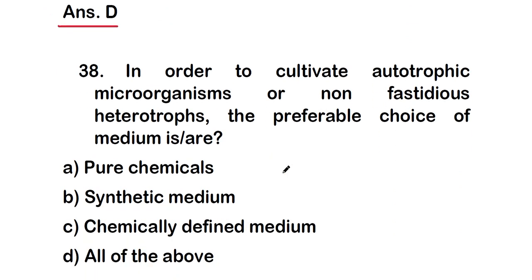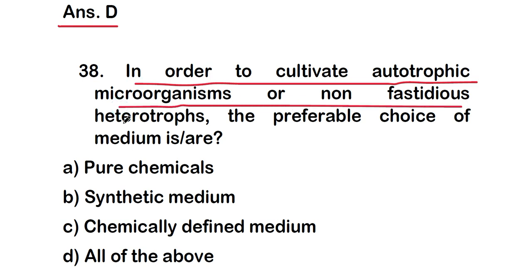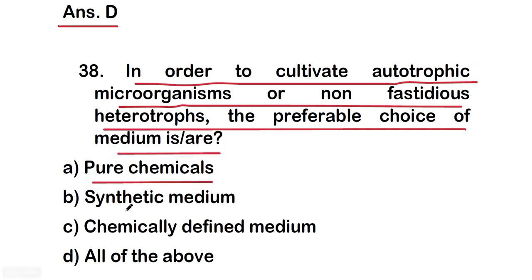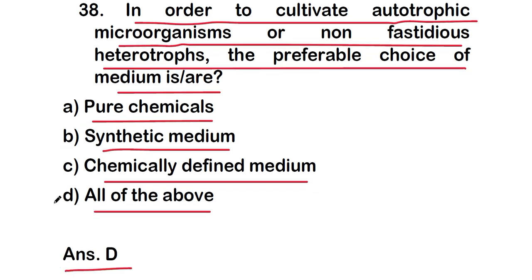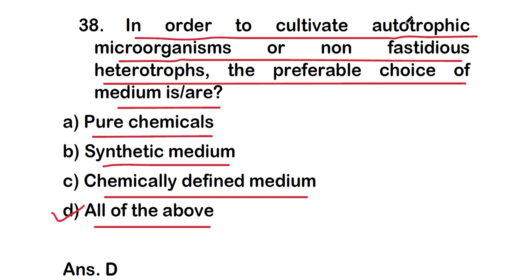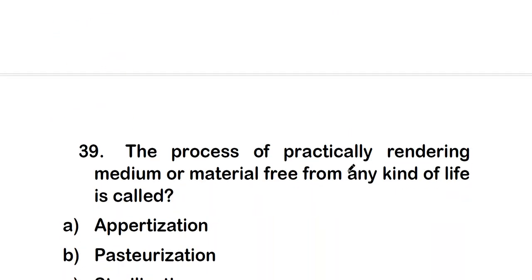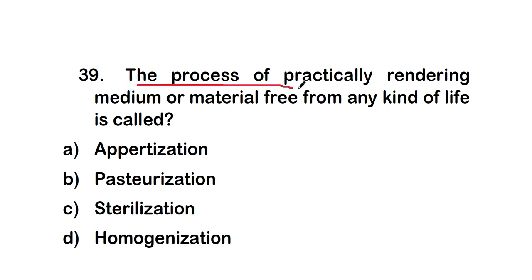Question 38: in order to cultivate autotrophic microorganisms or non-fastidious heterotrophs, the preferable choice of medium is — option D — all of the above: pure chemicals, synthetic media, or chemically defined medium.